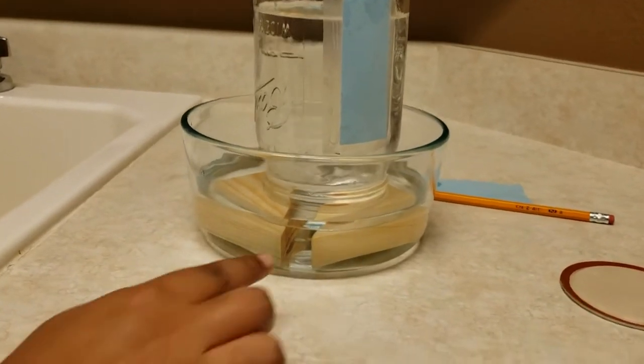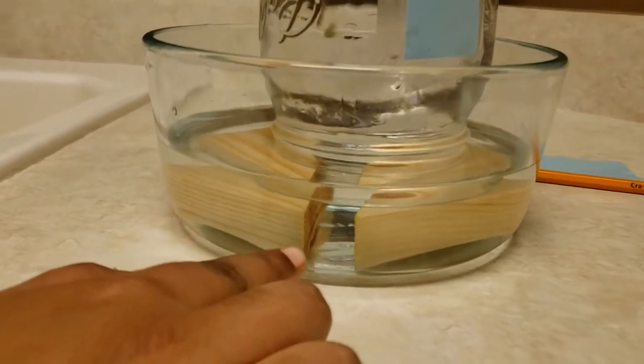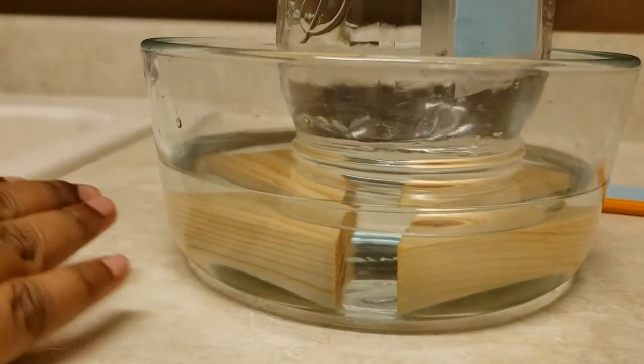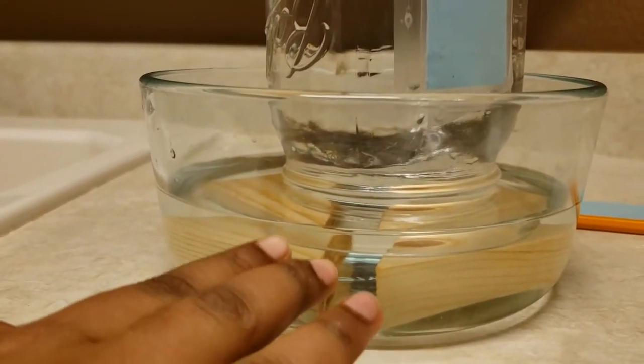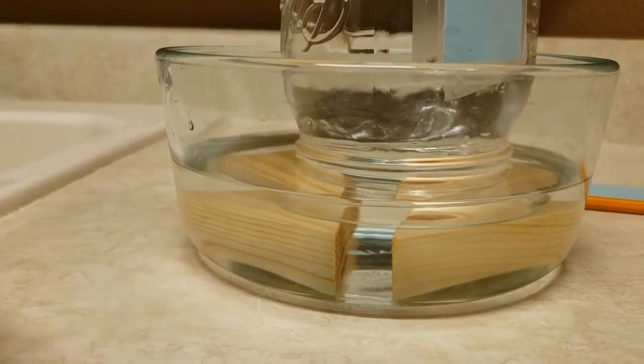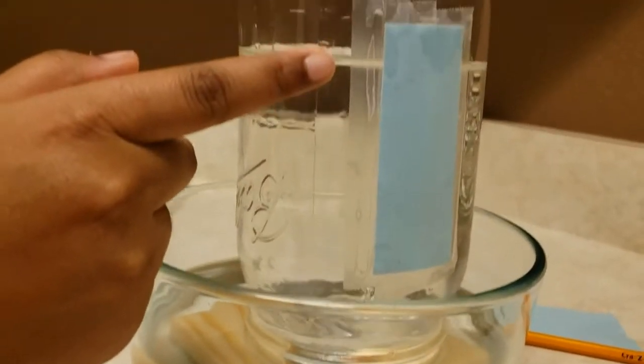Now see, water can flow in and out of the jar. Water is here too, so it starts balancing it out. And then this right here is our water level.